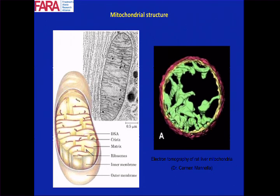Mitochondria are made of two layers of membranes: what we call the outer membrane, which is really like a container or a bag, and then inside, another layer of membranes which is highly invaginated, forming all these structures that we call cristae. Those are important because most of the enzymatic processes that occur in mitochondria are actually localized on these cristae. The reason why there are so many of them is because that allows mitochondria to perform a lot of work, having a lot of this important machinery condensed inside them.